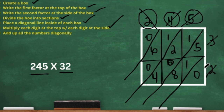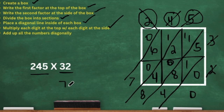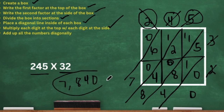Now let's add diagonally. Zero plus nothing is zero. That next section diagonally: we have five, one, and eight — eight plus five is 13, plus the one is 14. We put the four down and carry the one over. The next section has four, two, and one: four plus two is six, plus the two — wait, that's eight. Then that section: six plus one, which is seven. So we have seven, eight, four, zero — our final answer is 7840.